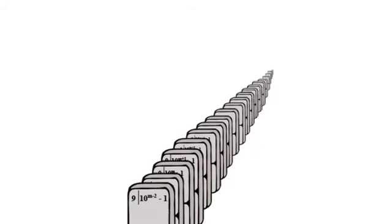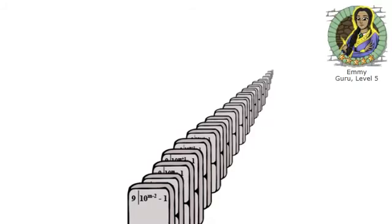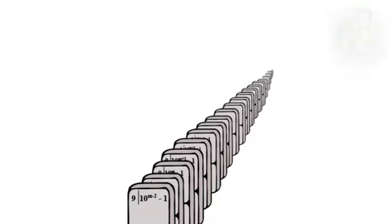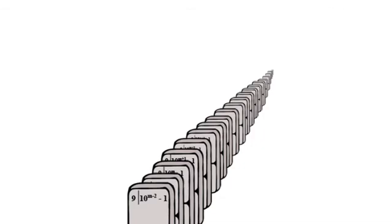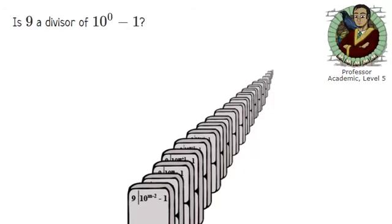In the closet? No, Ron. He means what's written on the first domino. Bear in mind, we're dealing with the whole numbers, so the first one will read... Zero. You mean 9 divides 10 to the power of 0 minus 1. Exactly. That's correct. To knock over the first domino, we must show that 9 is a divisor of 10 to the power of 0 minus 1.